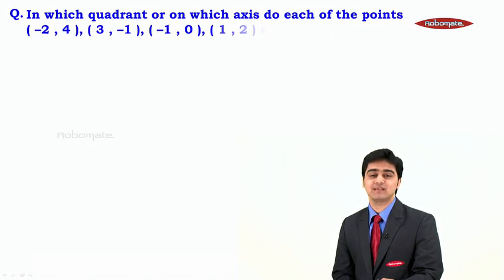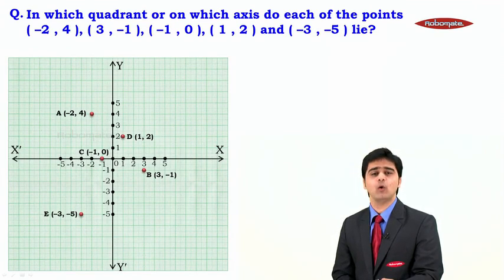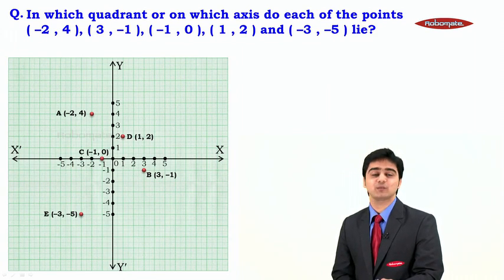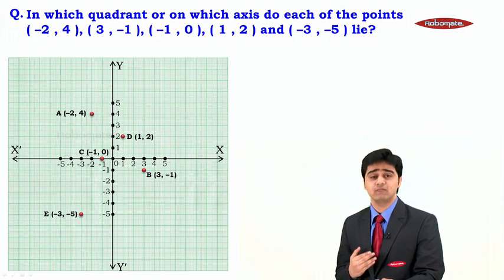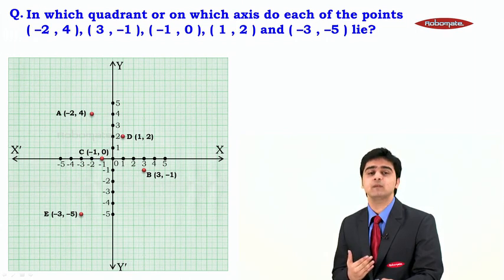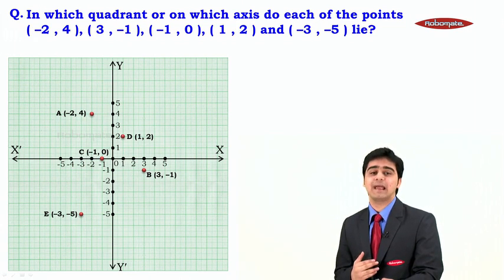Hello students, let us move on to one more very simple sum. The question says that in which quadrant or on which axis do each of the points minus 2 comma 4, 3 comma minus 1, minus 1 comma 0, 1 comma 2, and minus 3 comma minus 5 lie. They have given us some points with the respective coordinates and we need to identify whether the points lie in the quadrants or on any of the axes.